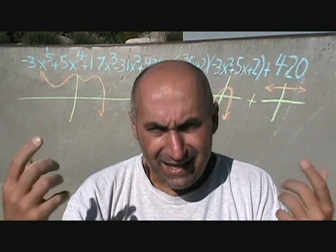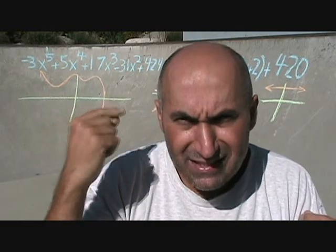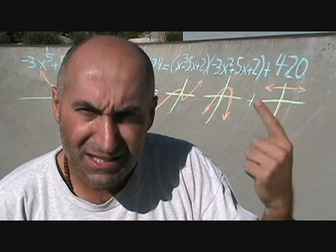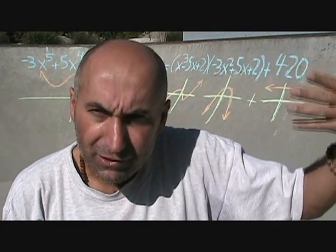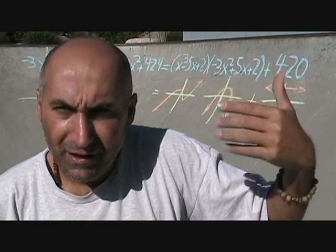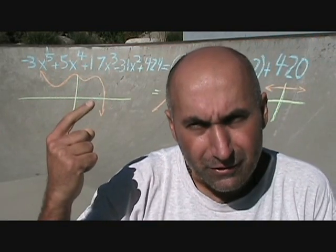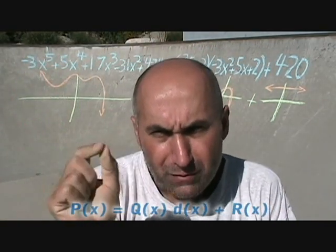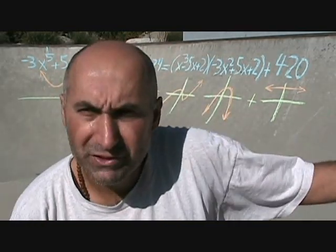The division statement is saying graphically that this function is equal to this function times this function, plus this function. When you add a function, it's just a translation — just moving around the Cartesian coordinate system. So if you multiply these two graphs together and moved everything 420 units higher, you would get the original function.